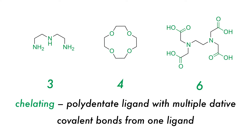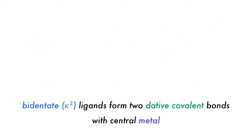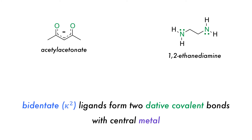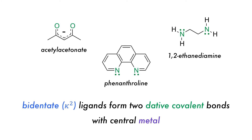Ligands can have multiple binding sites, and if they do, they are called polydentate. Bidentate ligands form two dative covalent bonds with the central metal and are typified by 1,2-ethane diamine, which binds through two nitrogen atoms, acetylacetonate with two oxygen atoms, and phenanthroline, among others.